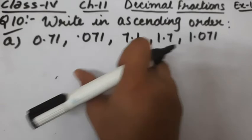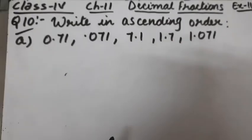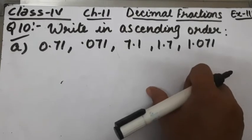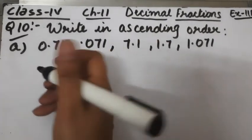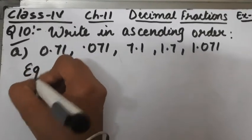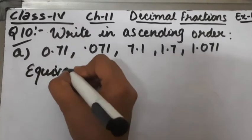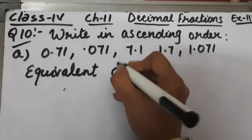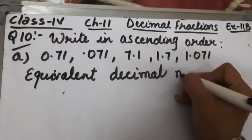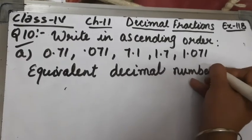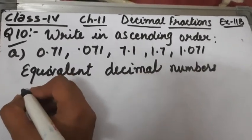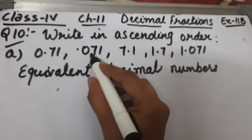The comparison becomes easier if we write all the numbers with the same number of digits after the decimal part. So first of all we'll write equivalent decimal numbers — also called like decimals. Both terms mean the same thing, so first convert to like decimals or equivalent decimals.